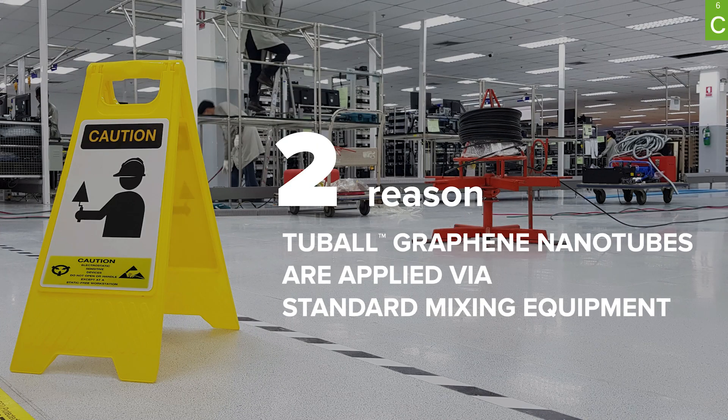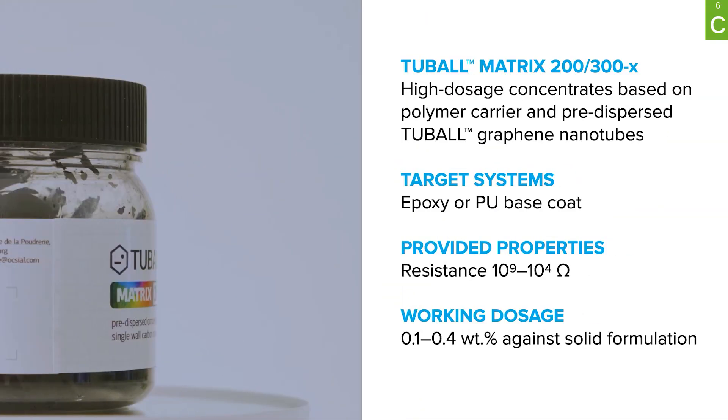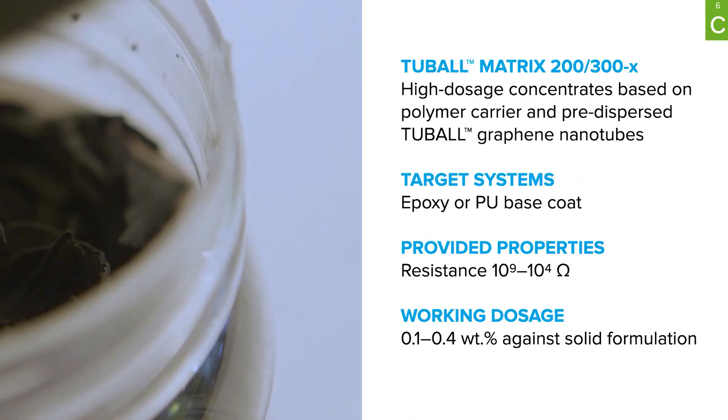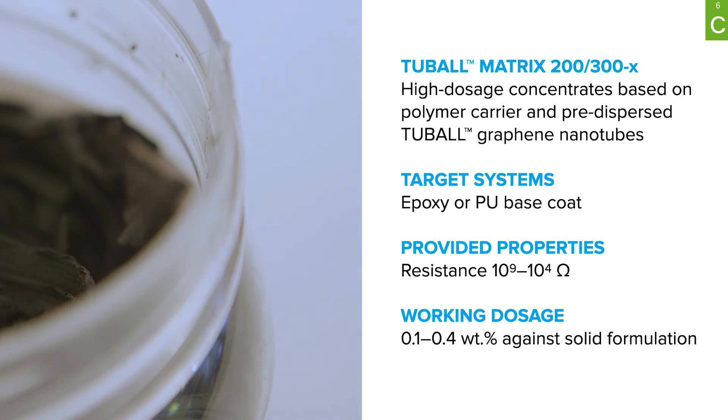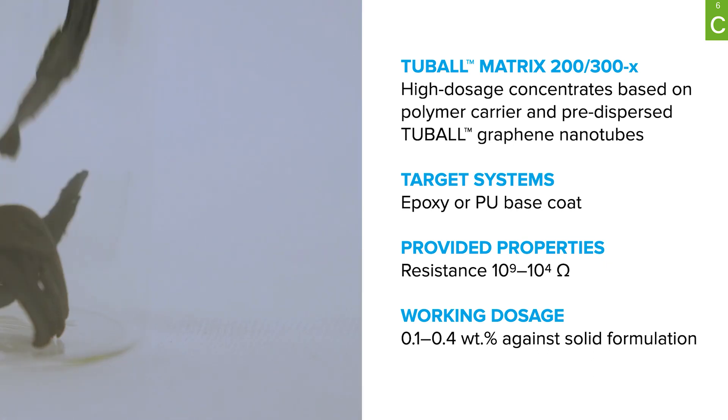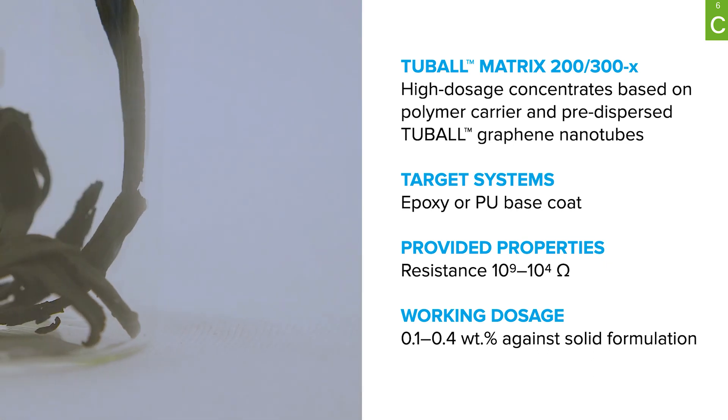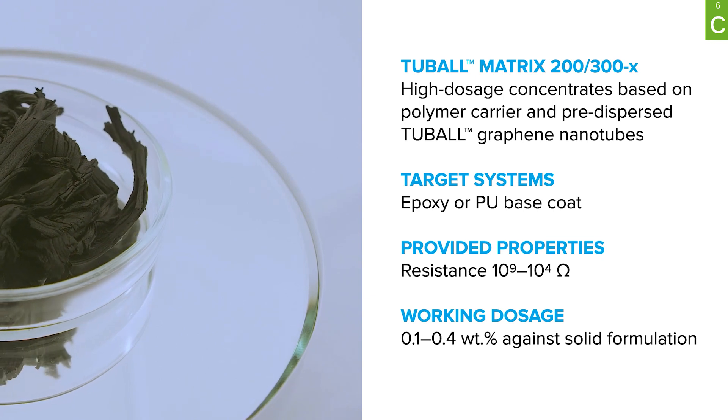Reason number two: you don't need special equipment to mix tubal nanotubes into your flooring compound in industrial volumes. You don't have to disperse tubal graphene nanotubes directly into your flooring compounds. Axial has designed TuboMatrix, which is a concentrate of pre-dispersed tubal graphene nanotubes. Using this concentrate helps minimize implementation time and reduces your efforts, time, and money in integrating the new technology into your flooring business.